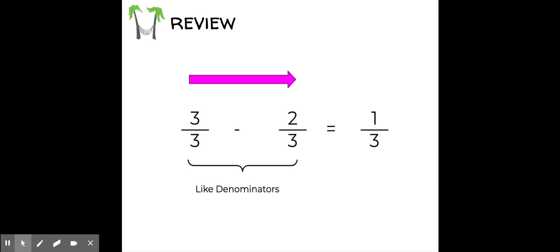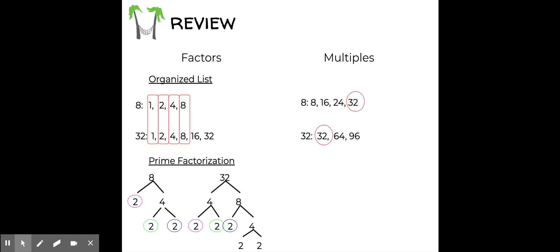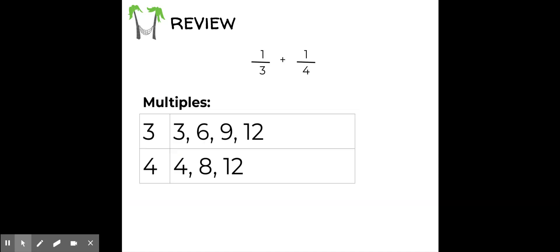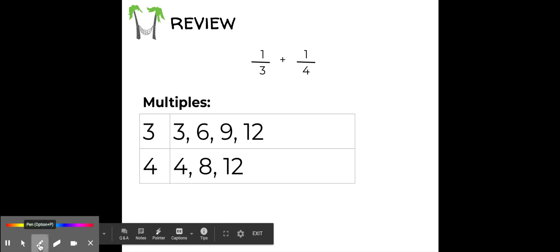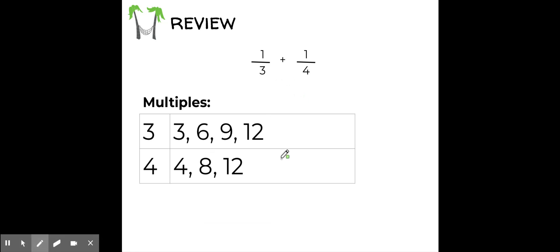Let's review: when we're subtracting fractions with like denominators, all we have to do is subtract across the top with the numerators. So 3 minus 2 equals 1, and my denominator stays the same. I also want to review finding multiples and factors and using prime factorization — we can make organized lists, use a factor tree, or just write out multiples of numbers to look for common multiples. This is something we did in our previous lesson, where we found common denominators when adding unlike fractions.